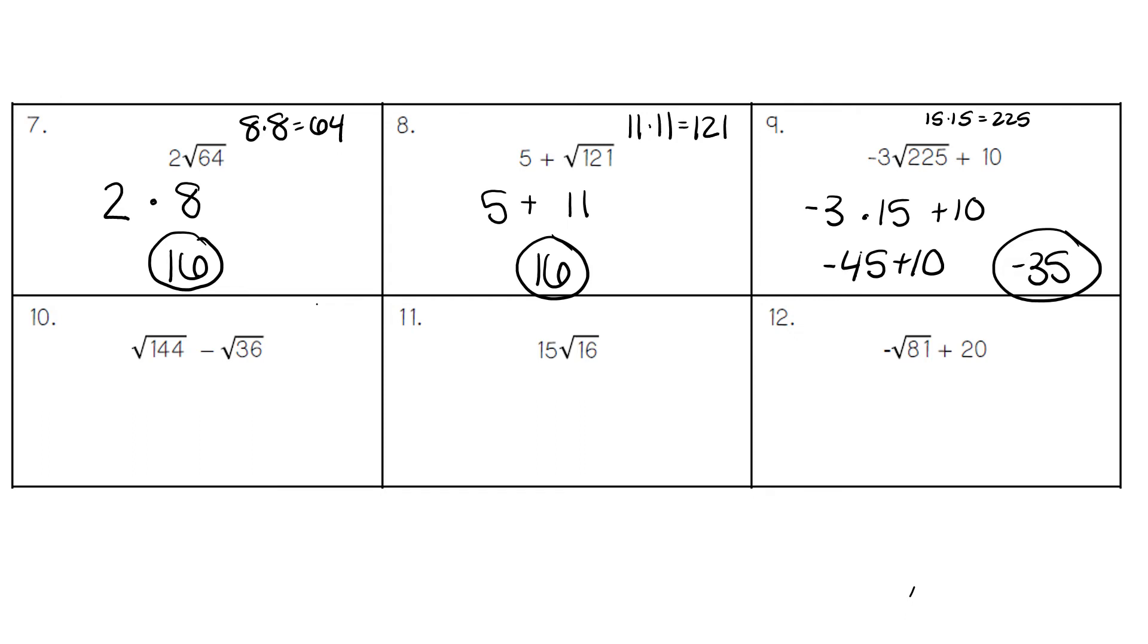For number 10, we have the square root of 144, which is 12, because 12 times 12 is 144, minus the square root of 36, which is 6. 12 minus 6 gives us a final answer of 6.